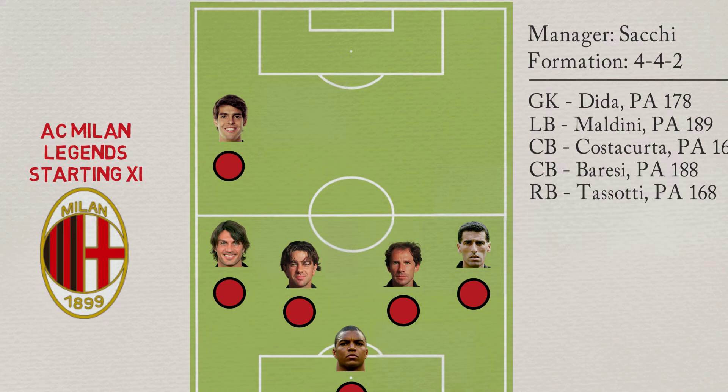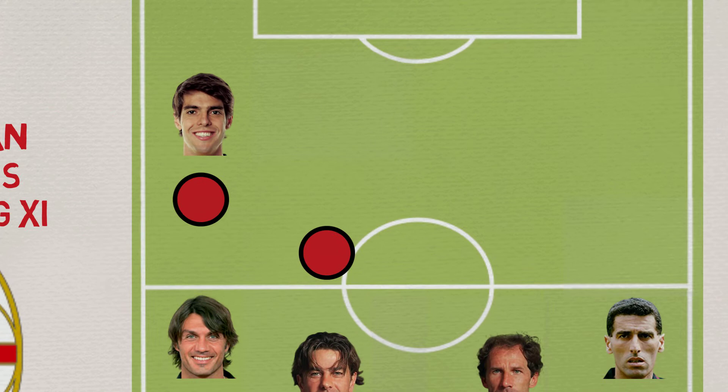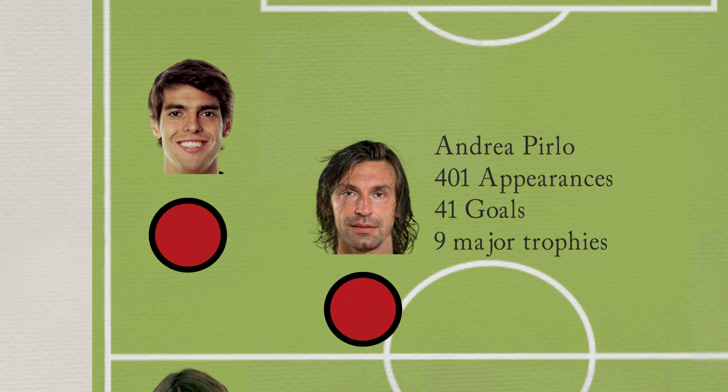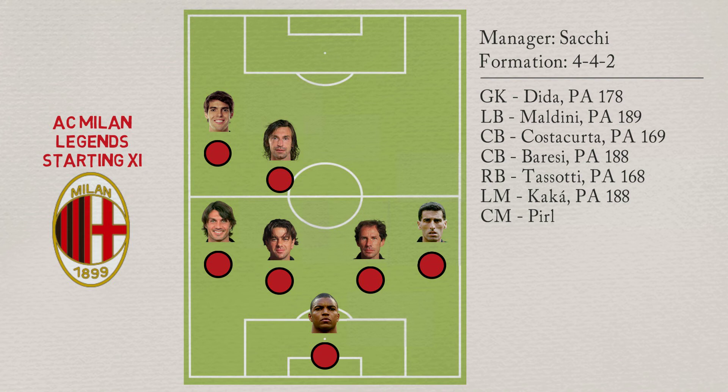As central midfielder, Andrea Pirlo. The Italian playmaker made 401 appearances with 41 goals, and won 9 major trophies with AC Milan. Pirlo has a potential ability of 181.